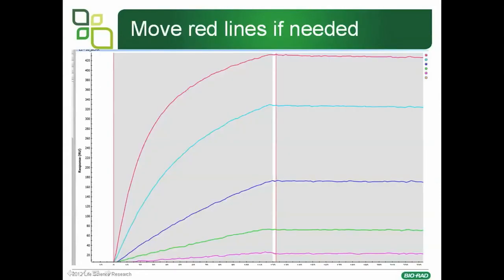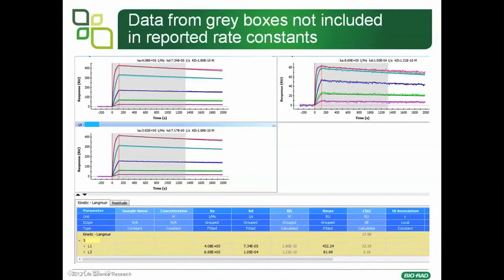There might be occasions where you need to move the red line. The left-hand red line marks the start of the association and the right-hand red line marks the start of the dissociation, and sometimes you may need to move those lines. The grey boxes denote regions where, whilst the software will fit at every single point along the sensorgrams, only the data in the grey boxes gets reported in the rate constants table at the bottom. For example, if you chose to exclude an area by not including it in the grey boxes, it would not appear in the tables, even though the data is fitted in the sensorgrams.